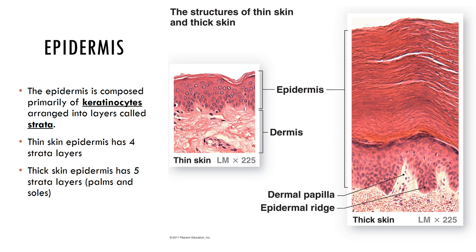The epidermis has cells: keratinocytes and melanocytes, and also other cell types like epidermal dendritic cells. The keratinocytes divide and produce a fibrous protein called keratin. The melanocytes are in the lower portion of the epidermis and produce the pigment melanin, which helps protect our DNA. The dendritic cells are white blood cells from bone marrow that function as macrophages and help activate our immune system.